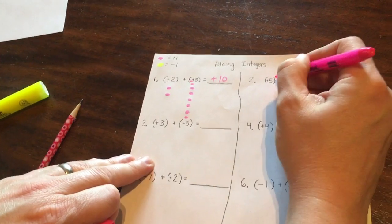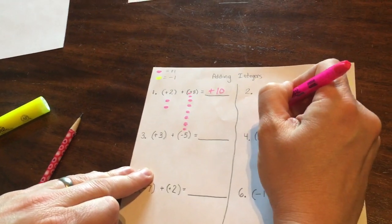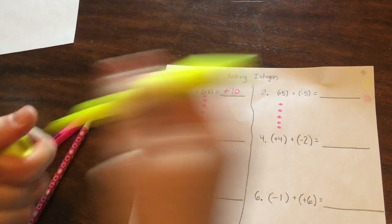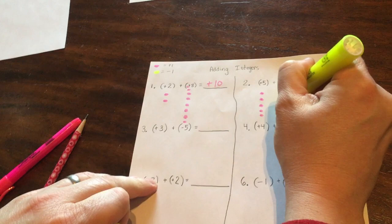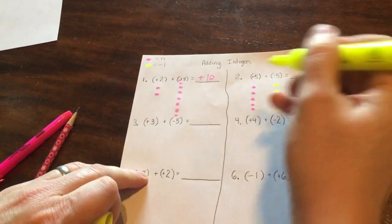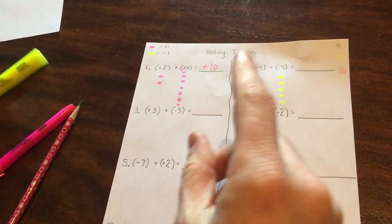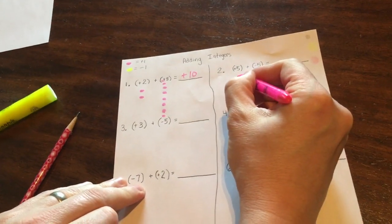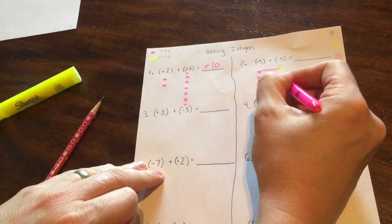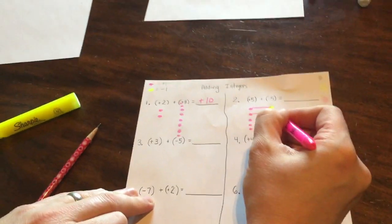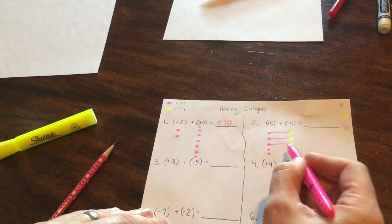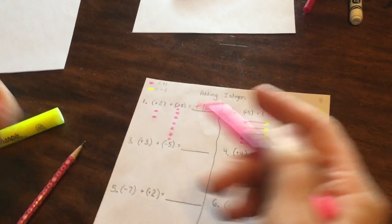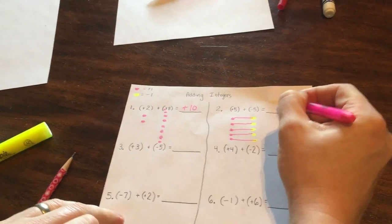So here's my five right here. One, two, three, four, five. And then I have my five negatives. One, two, three, four, five. And the concept of zero pairs, when you have positive one of something and a negative of another, it becomes zero. So this is zero. That's zero. These two together are zero. These two together are zero. Two together zero. And what do we have left? We have zero.